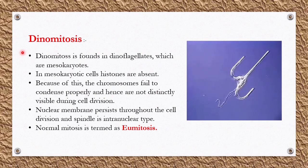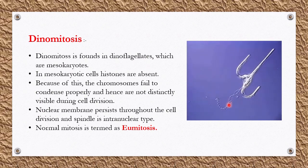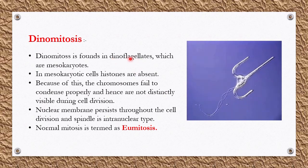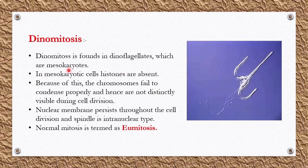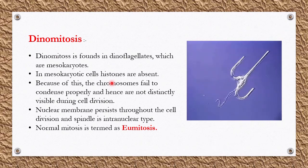The next modification of mitosis is dynamitosis. It is found in a special kind of organism — the dinoflagellate. As you can see in the diagram, this organism has two flagella, which is why it is called a dinoflagellate. Such organisms show a different kind of mitotic event called dynamitosis. These organisms are included in mesokaryotes. Mesokaryotic cells do not have histone proteins.